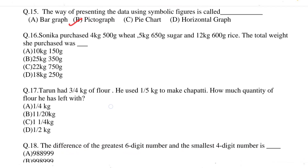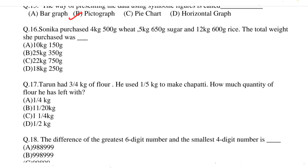Question 16: Sonika purchased 4 kg 500 gram wheat, 5 kg 650 gram sugar and 12 kg 600 gram rice. The total weight she purchased was? The correct option is option C, 22 kg 750 gram. Question 17: Tarun had 3/4 kg of flour. He used 1/5 kg to make chapati. How much quantity of flour does he have left? The correct option is option B, 11/20 kg.